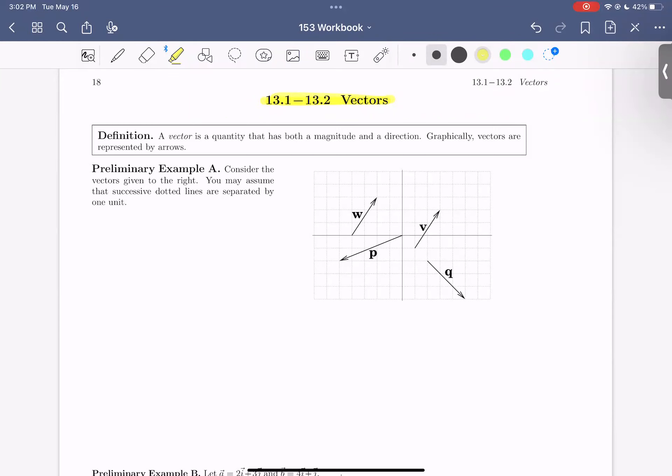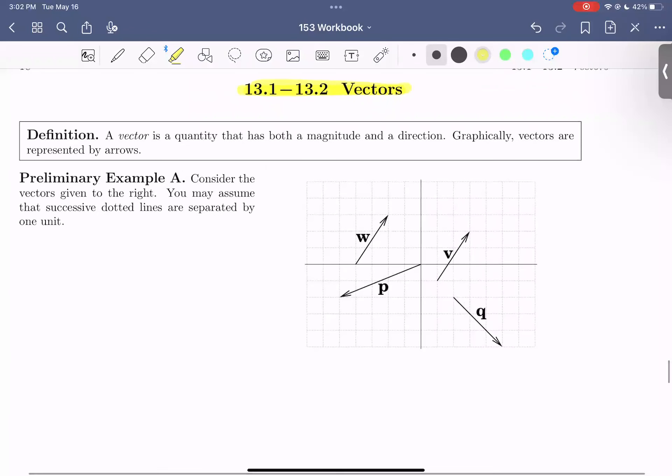So first, let's look together at the definition of a vector. A vector is a quantity that has both a magnitude and a direction.